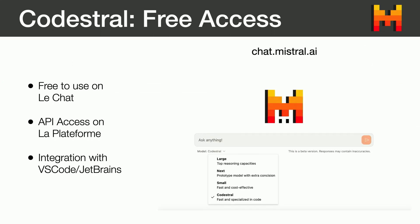It is multilingual — we trained it with more than 80 programming languages and across all these different languages it tends to perform better than the other models. It's free to use on our chat interface at chat.mistral.ai. We also have API access available on our platform, which is free to use until the end of July. We also have integration with VS Code and JetBrains, so you can download a plugin in VS Code or JetBrains and use it as a coding assistant for code completion.